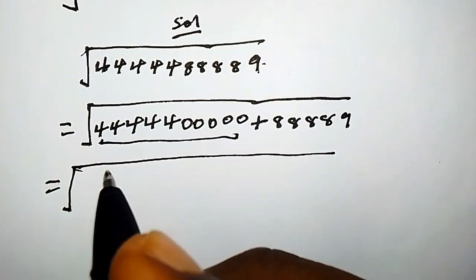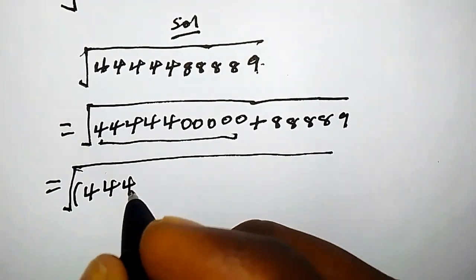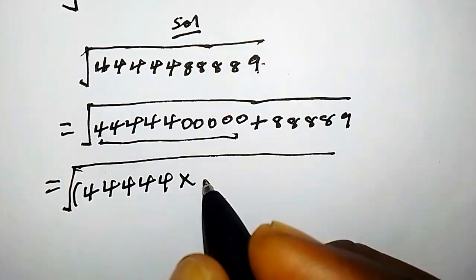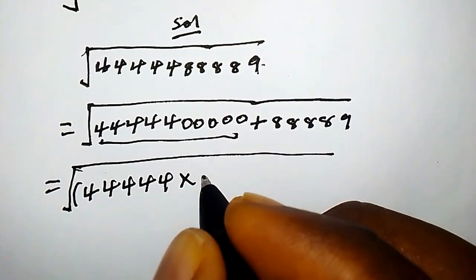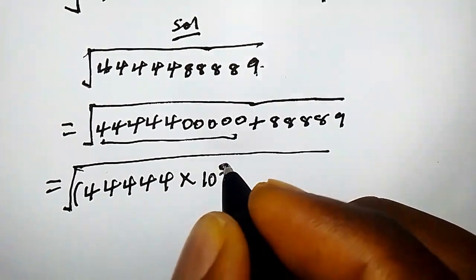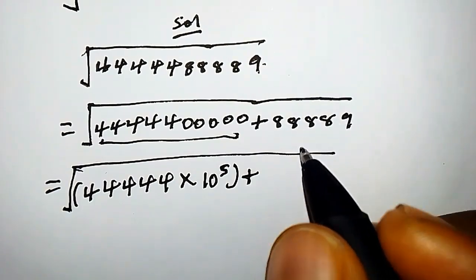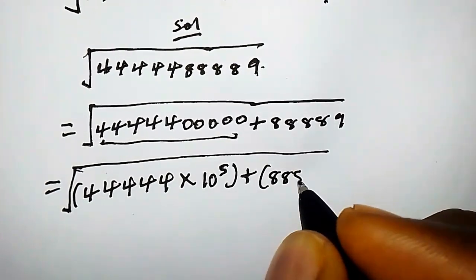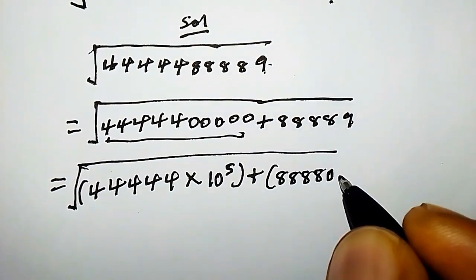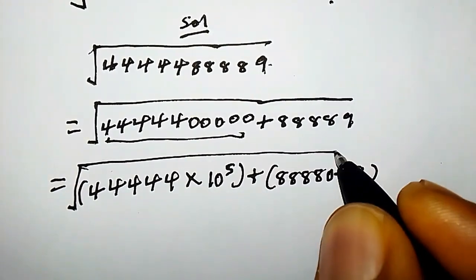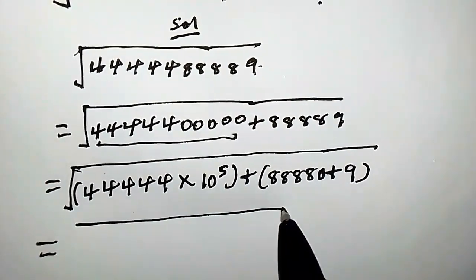Now let's proceed further. We can rewrite the first part as 4 times 10 to the power of 10 — since we have five zeros, that gives 10 to the power of 5 — plus the second part, which we rewrite as 8888 times 10 plus 9.